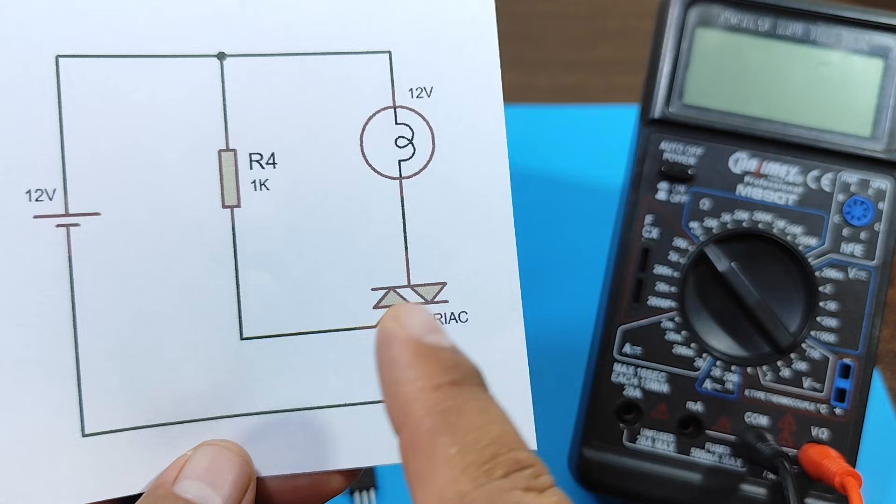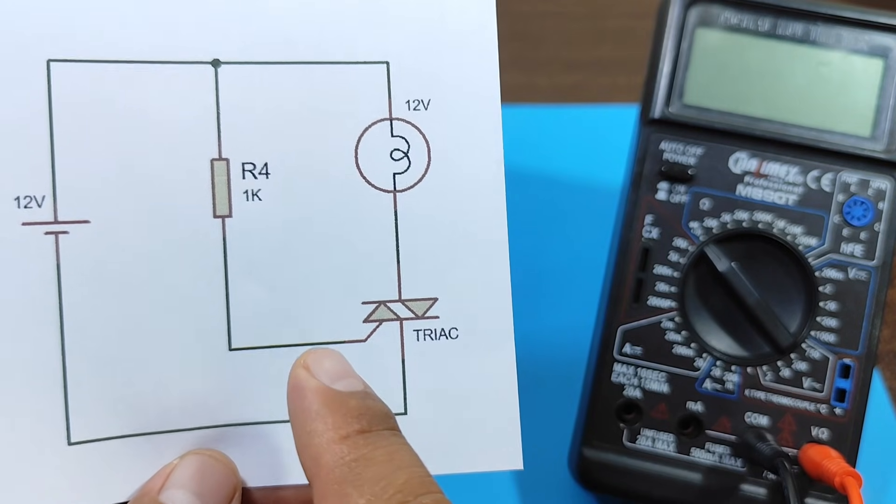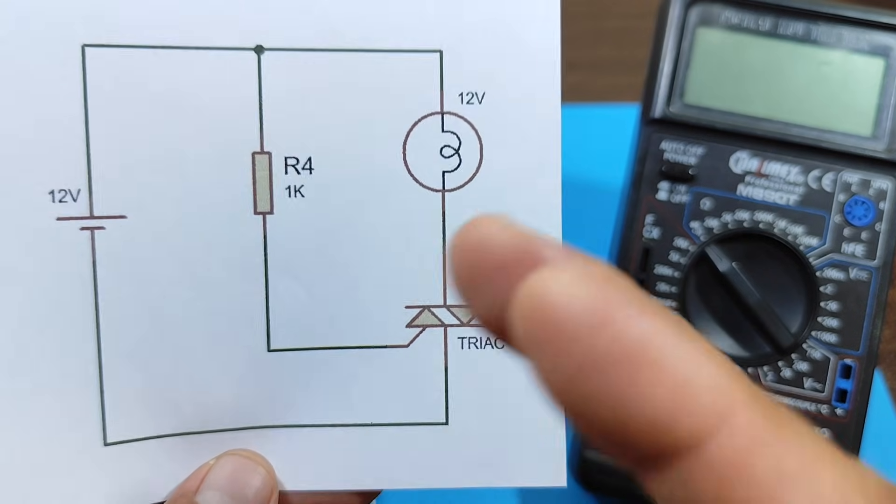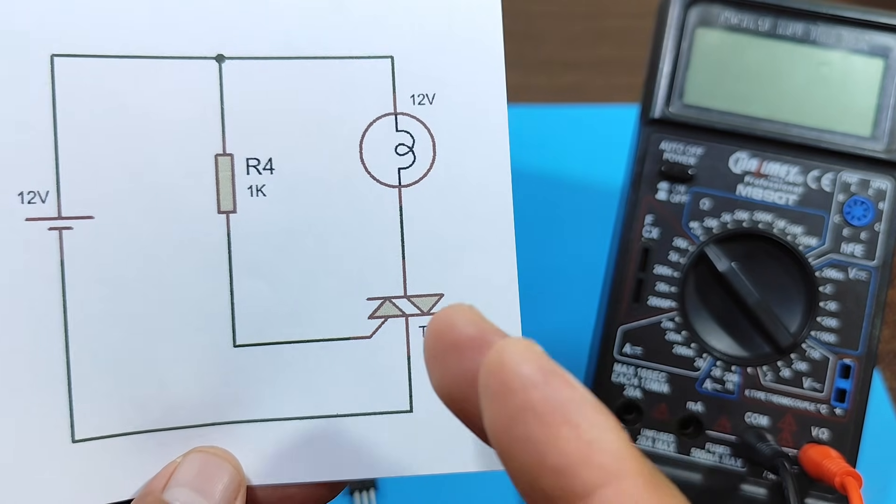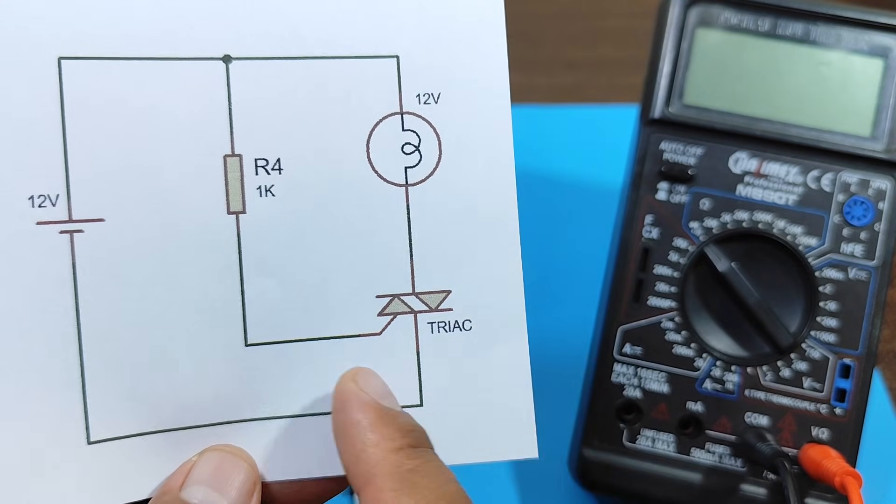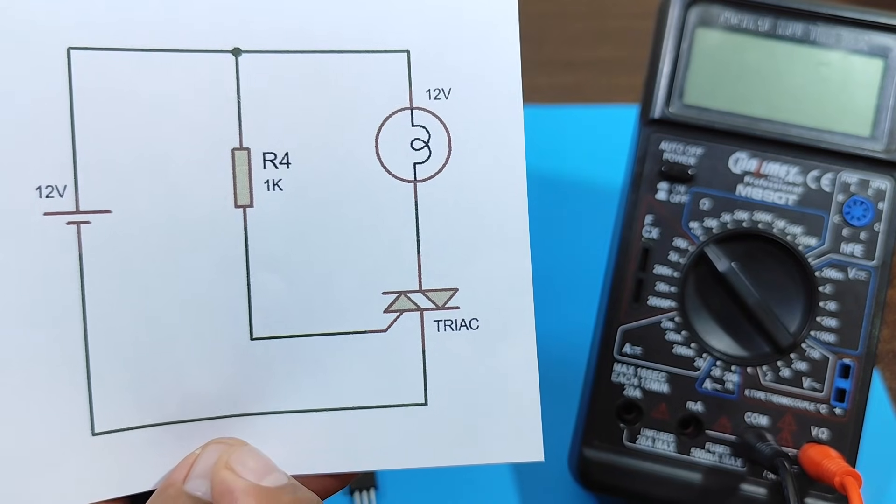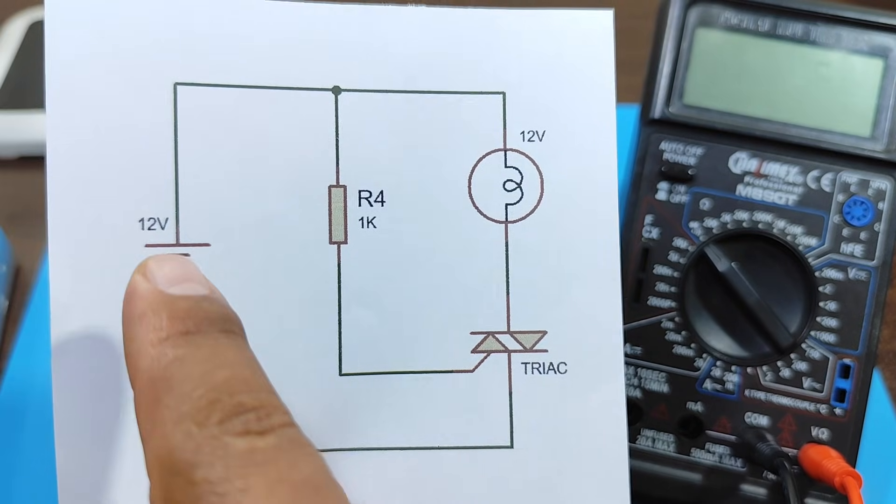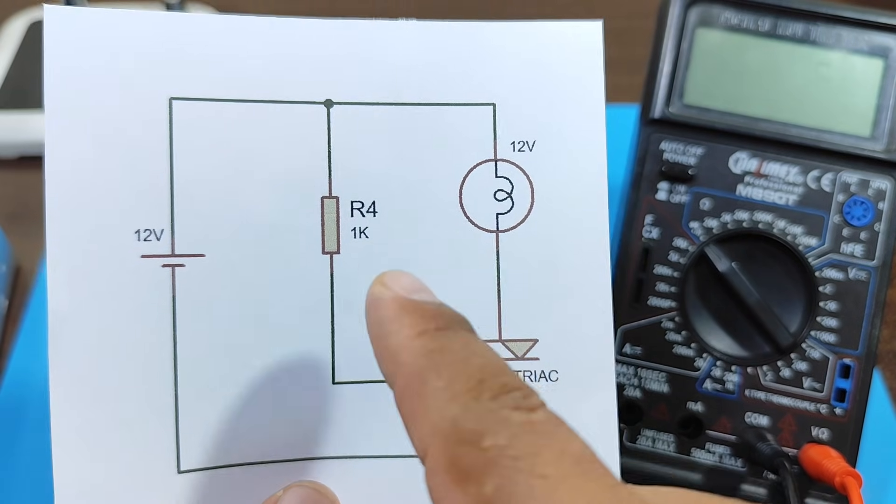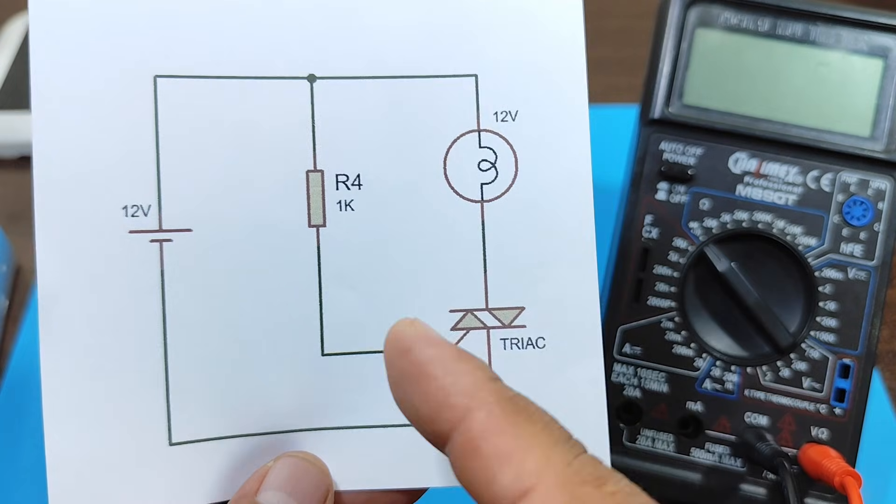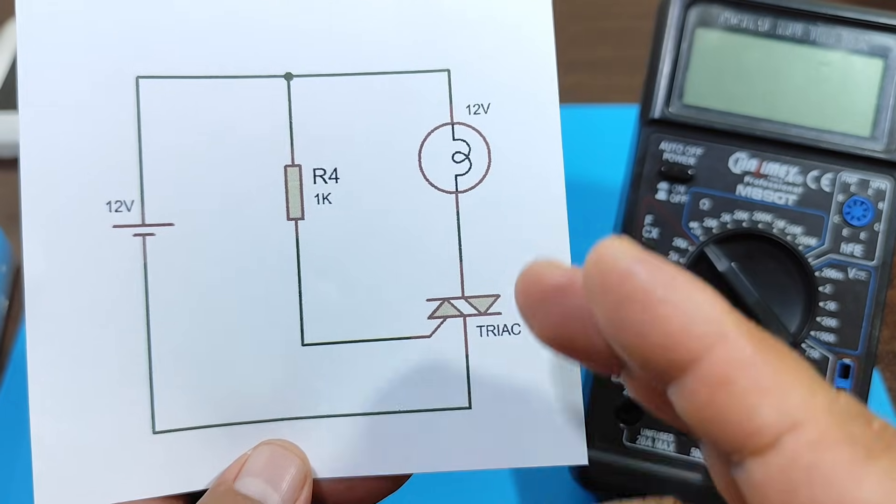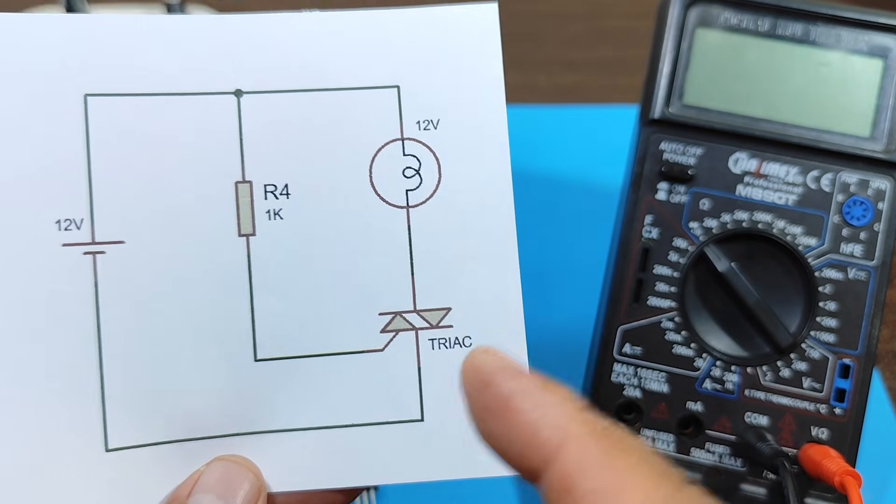We'll also measure the voltage that appears, or the required voltage, between the gate and T1. We'll also see the difference between the two circuits with respect to the required activation current. Please note that we are using direct current for this circuit. However, they can also use alternating current. But this time we are using direct current, so you can see that the triac can also be used with direct current.